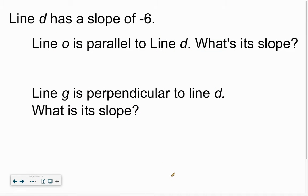Line D has a slope of negative 6. Starting off right away, we've got line O is parallel. Well, if D has a slope of negative 6, the parallel line is going to have a slope of negative 6 as well. Done.